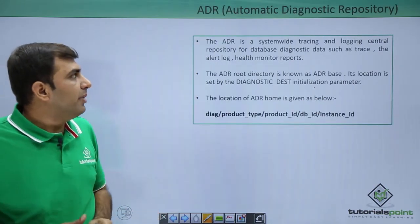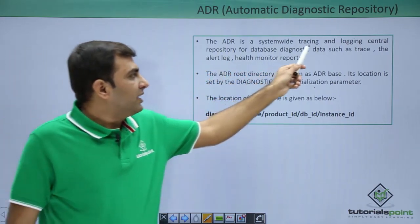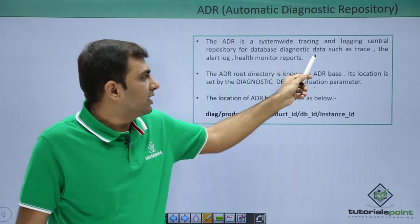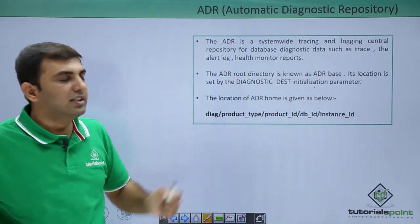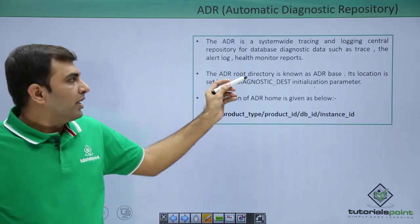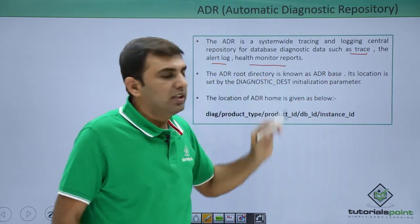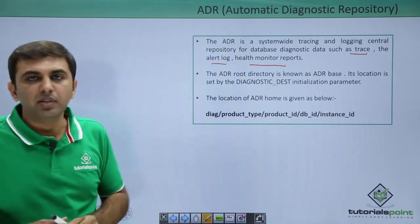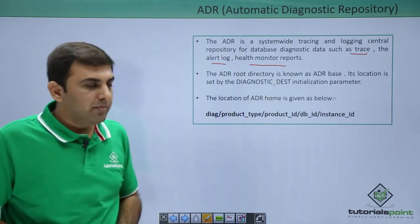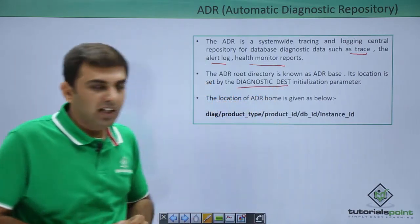Next, ADR — Automatic Diagnostic Repository. ADR is a system-wide tracing and logging central repository for database diagnostic data, such as trace files, alert log files, and health monitor reports. The ADR root directory is known as the ADR base, and its location is set by the diagnostic_dest initialization parameter.